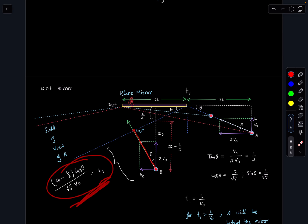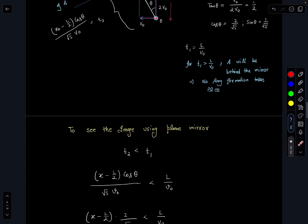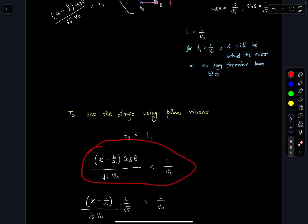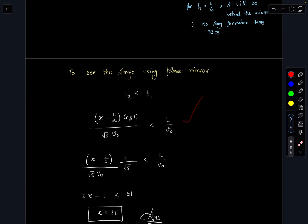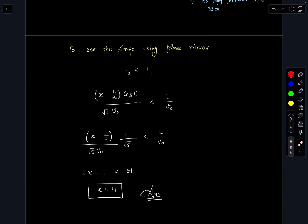Now this time T2 should be less than T1, where T1 is L by V₀. If T2 is less than T1, then persons A and B can see each other using the mirror. So I will do the same: x minus L by 2 cos theta divided by root 5 V₀ is less than L by V₀. When I substitute the value of cos theta and simplify, I am getting x should be less than 3L, or you can say maximum value of x is 3L itself. That is the answer for this particular problem.